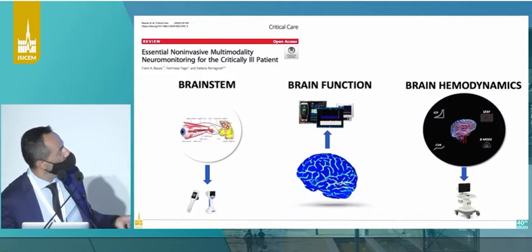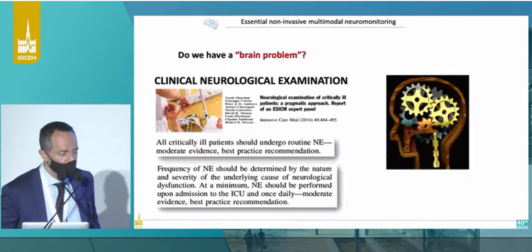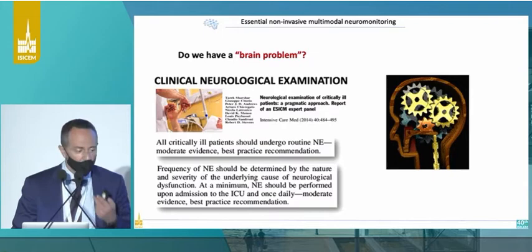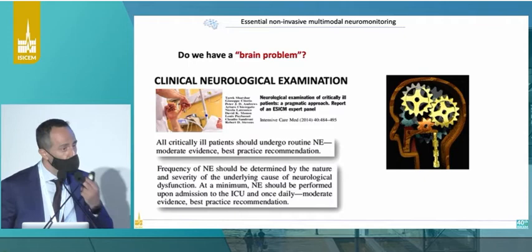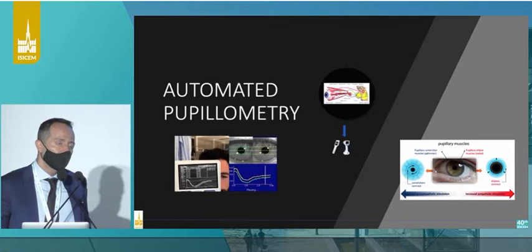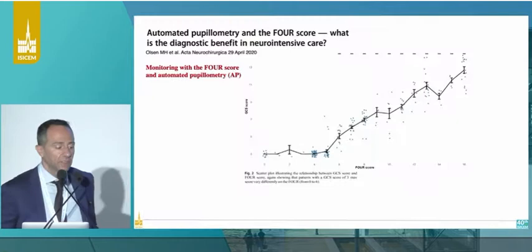I've picked three particular areas that we need information from in order to apply an essential non-invasive multimodality monitoring system. First of all, regarding whether we have a brain problem or not — we could apply a neurological exam, which is very important, but it's not specific enough, especially during the initial phase or in a patient who is not awake. This can be helped by automated pupillometry, which could give us information regarding activity of the brain stem.